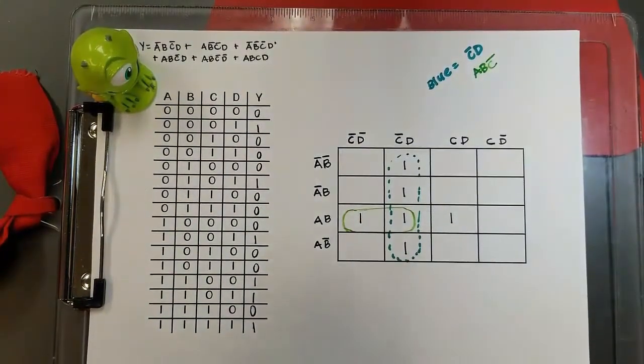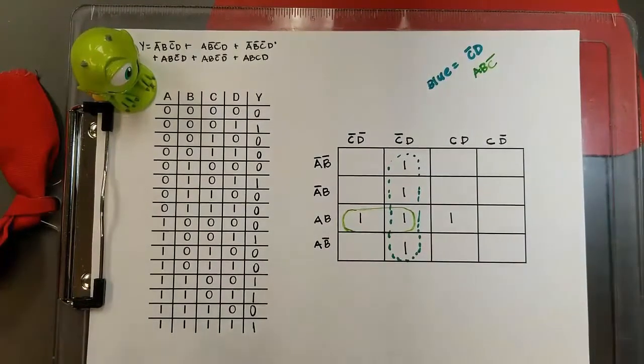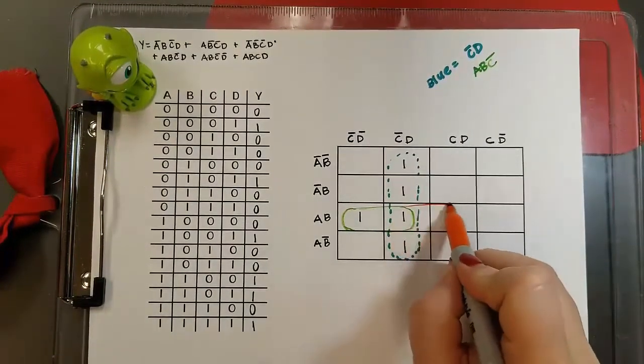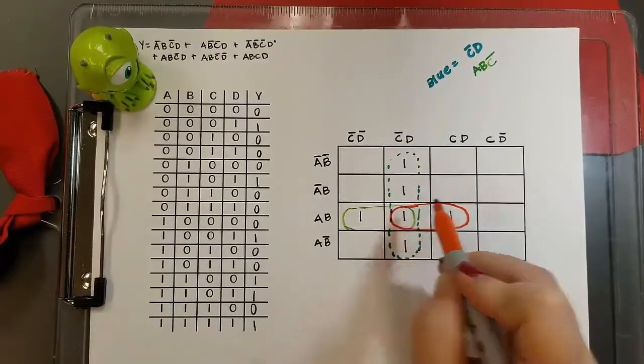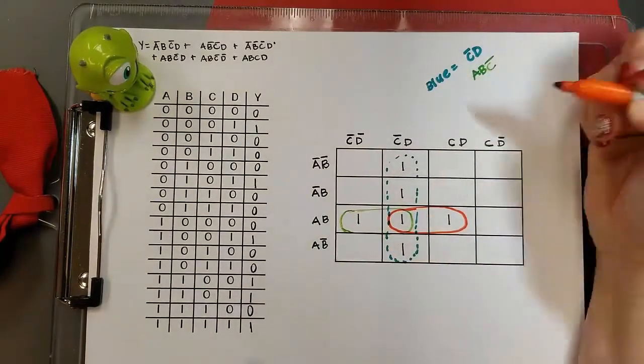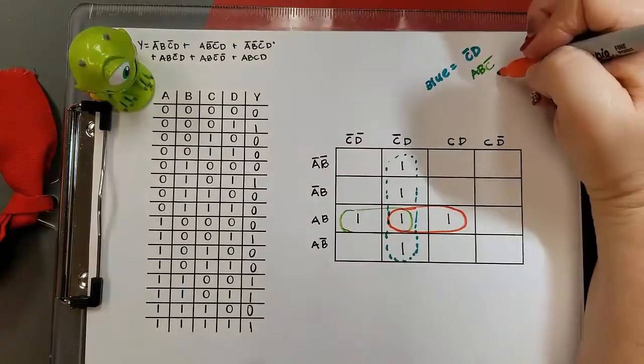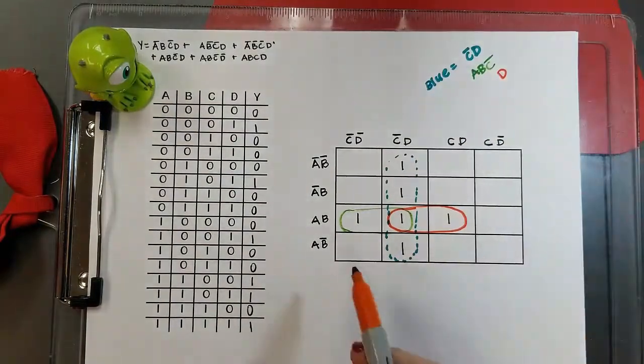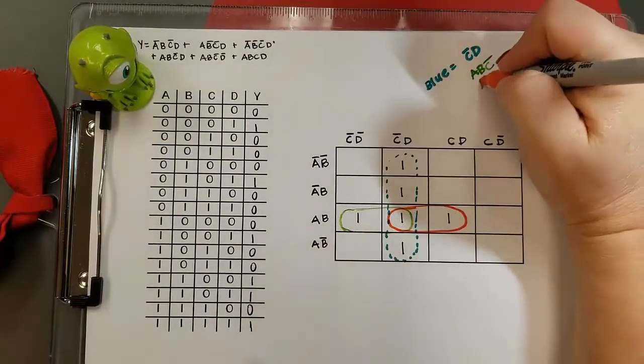Now I'm going to group the other one in a pair, because I don't want to leave it by itself when I can simplify it. As I move there, C changed, so I'm going to keep the D. And I still have A B.